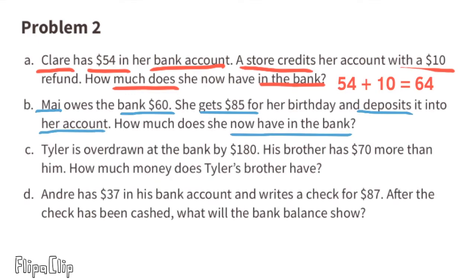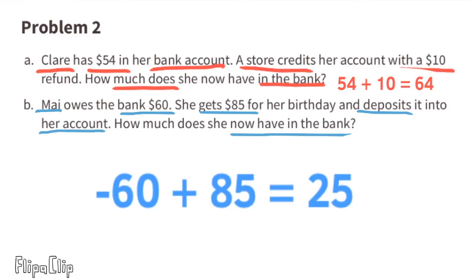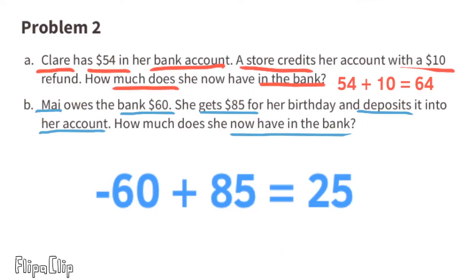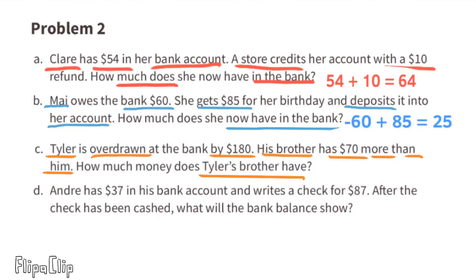Part b: Mia owes the bank $60. She gets $85 for her birthday and deposits it. She owes $60, meaning negative $60, and she adds $85. $85 minus $60 equals $25. After depositing $85, she'll have $25 in the bank.